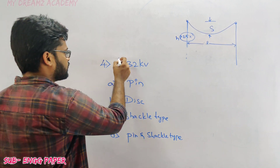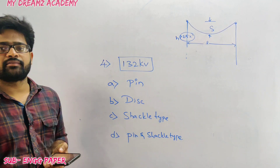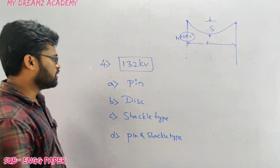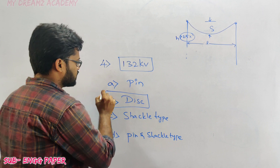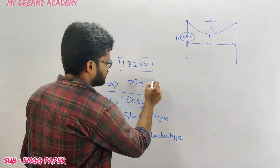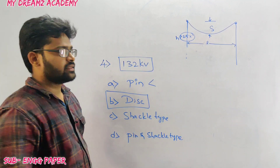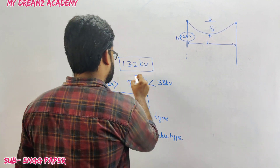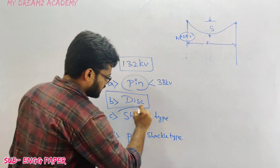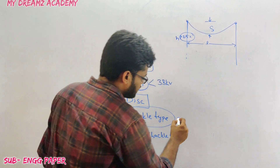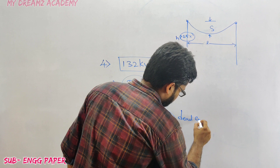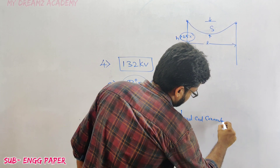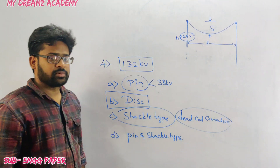If the rating is 132 kV, we use disk type insulators. If the rating is less than 33 kV, we use pin type insulators. Shackle type insulators are used at dead-end connections.